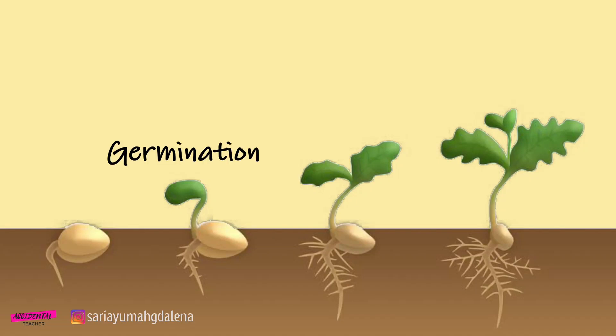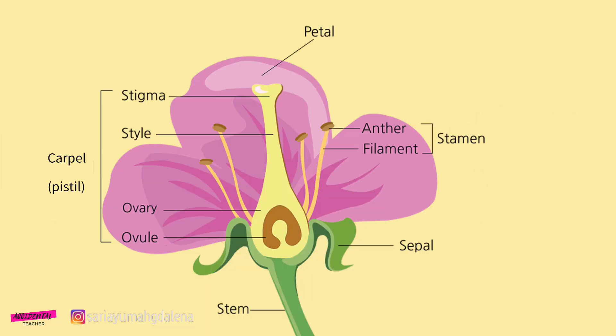After germination process, the seedling grows into an adult plant that bears flowers. Flowers contain the male and female reproductive organs of flowering plants.